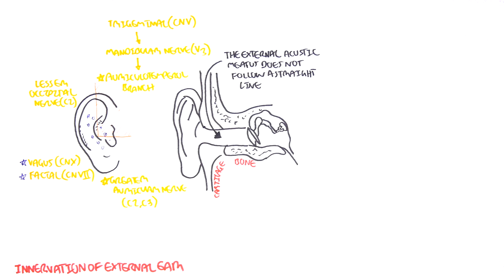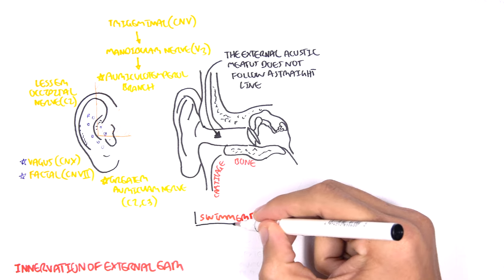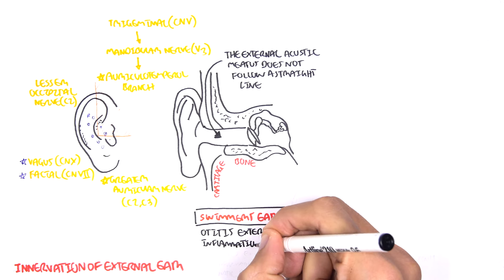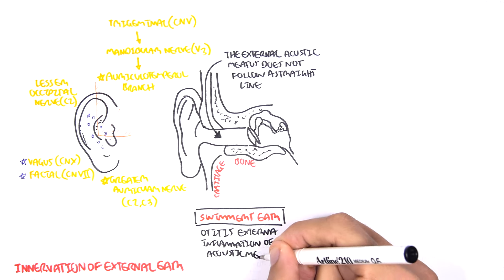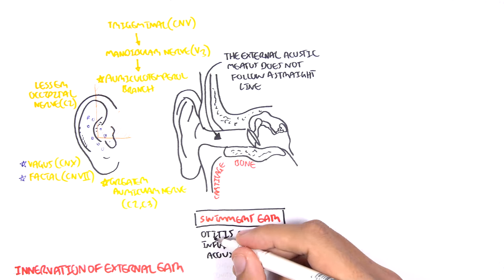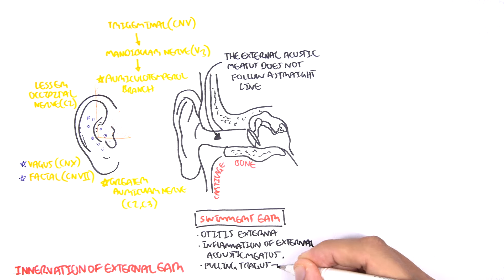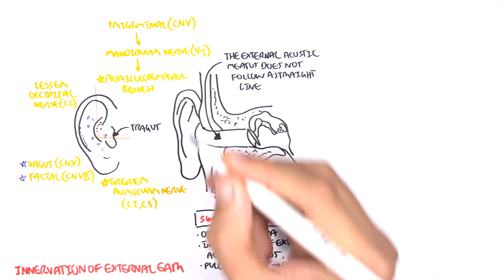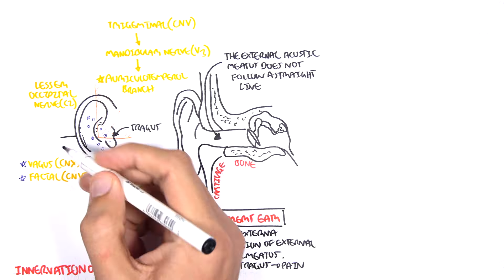Looking at some clinical relevance, swimmer's ear, also known as otitis externa, is an inflammation of the external acoustic meatus. Clinical sign is pulling the tragus elicits pain. The tragus is this part of the auricle.